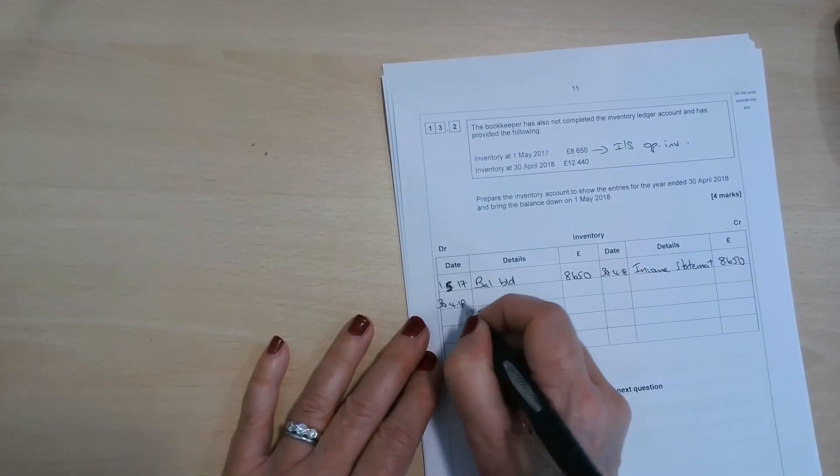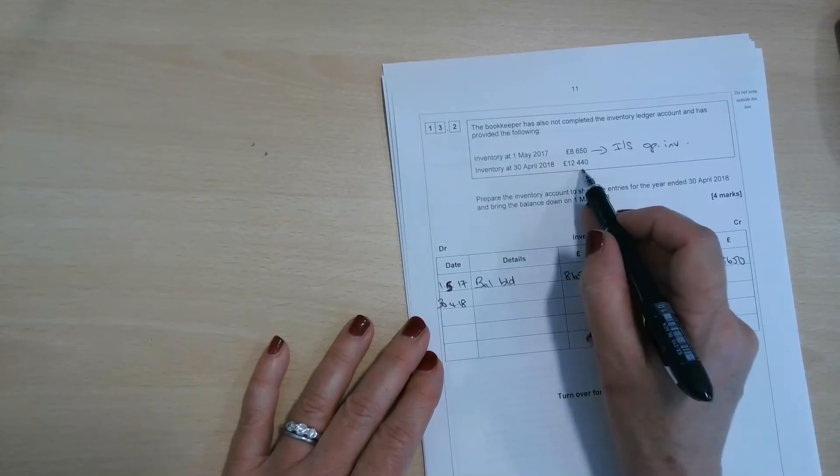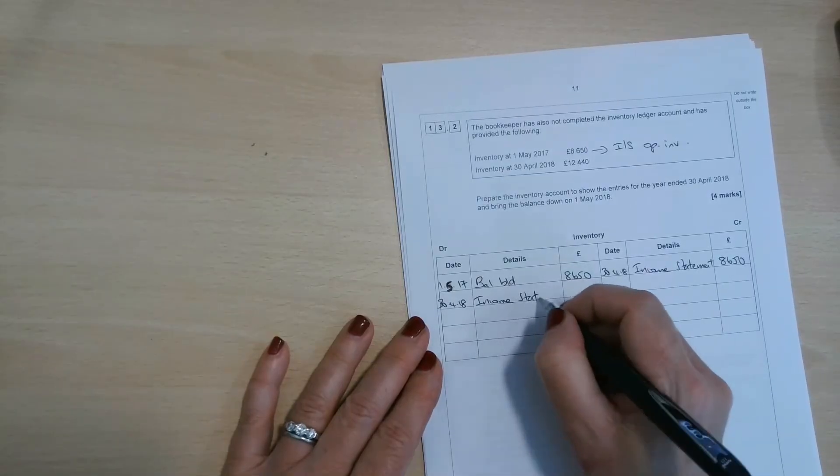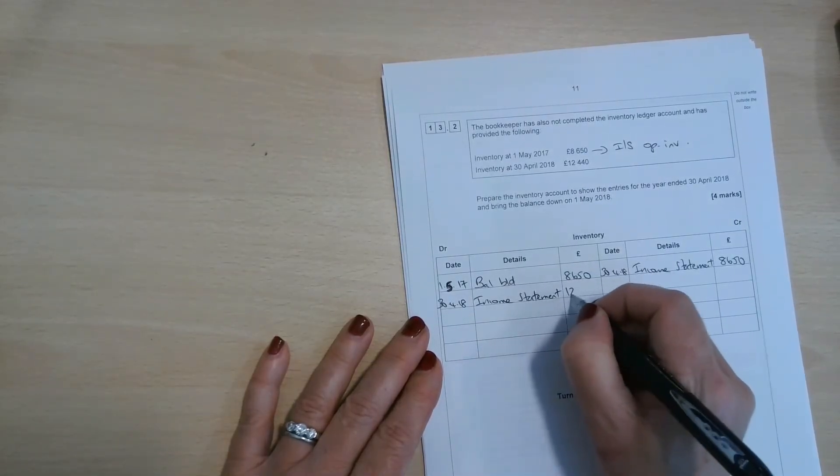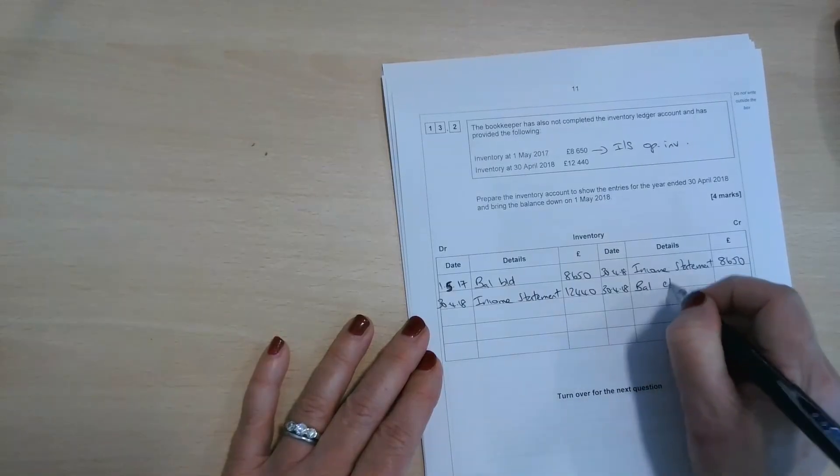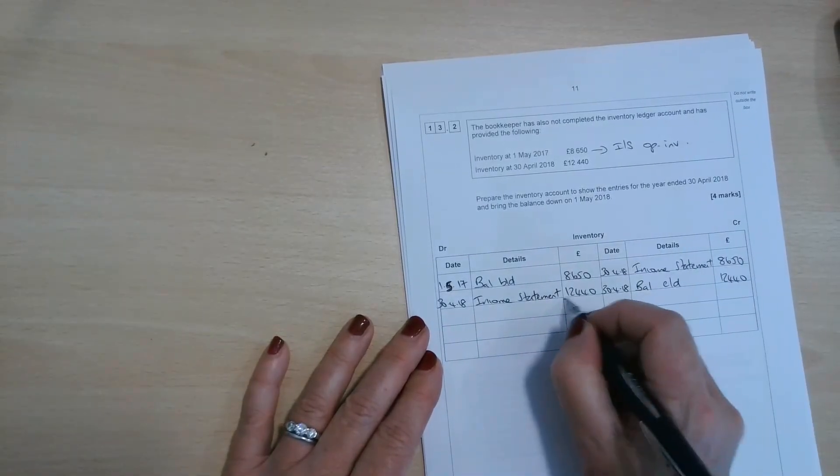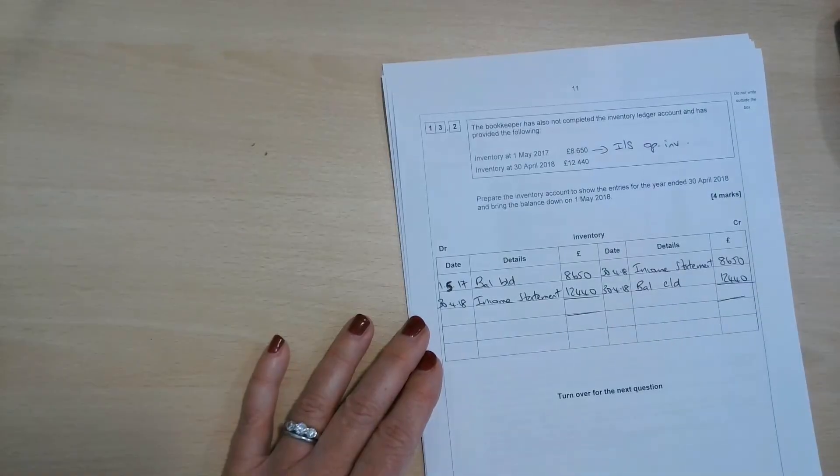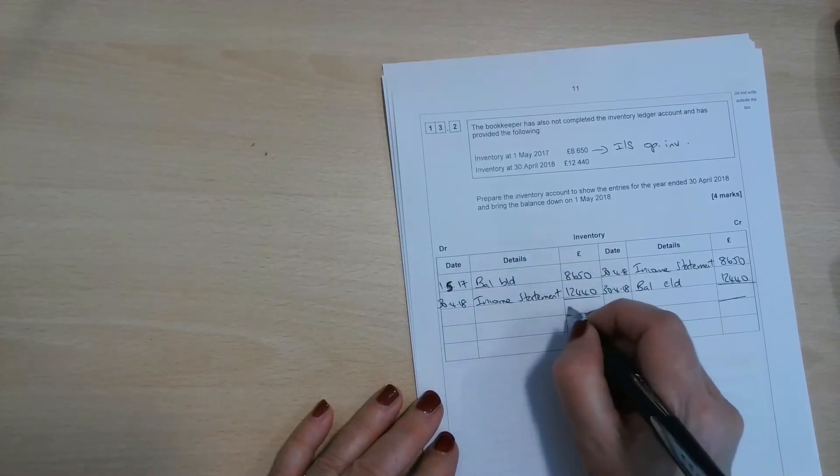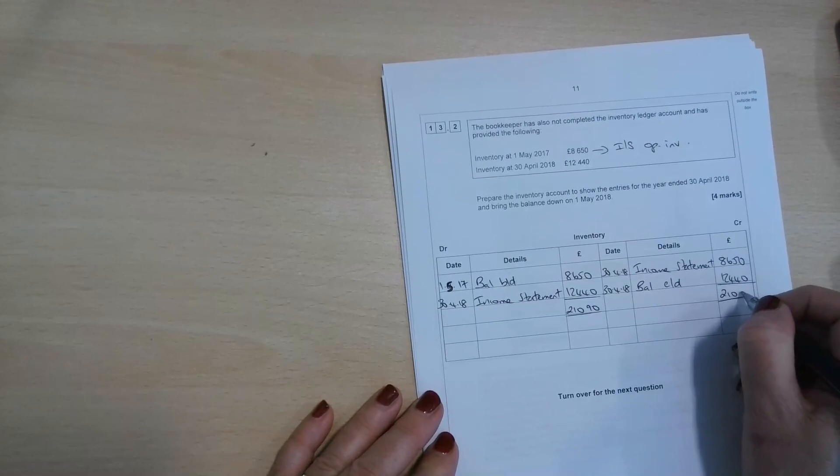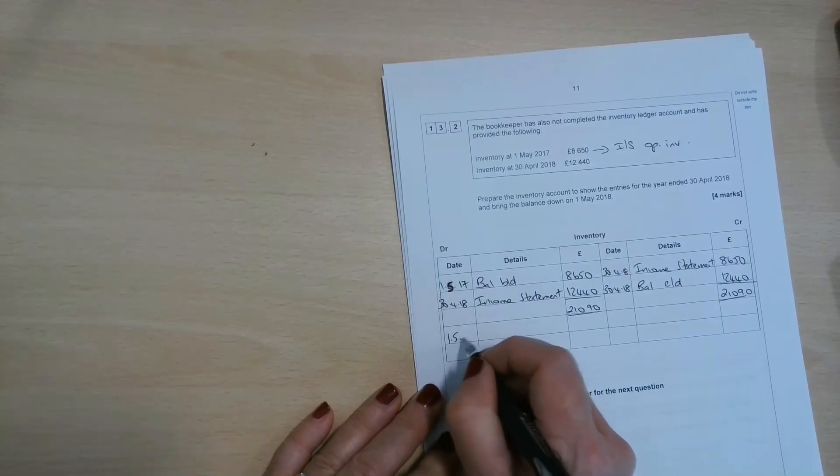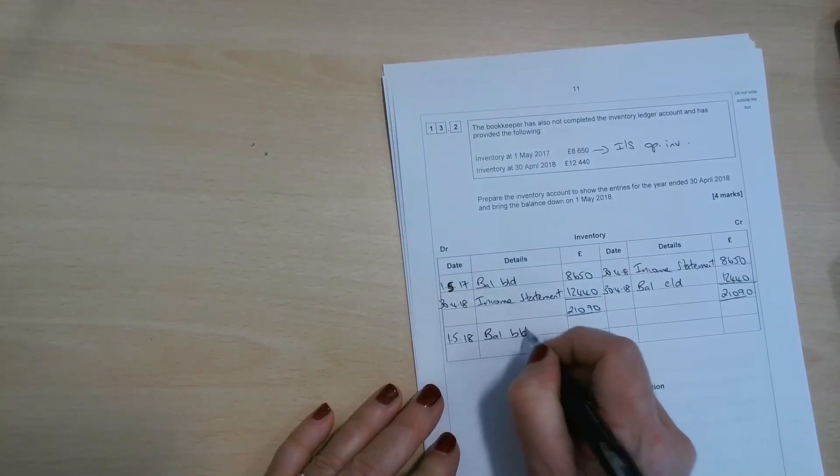And then what we need to do is make a second transfer to the income statement for closing inventory. So closing inventory is going to be credited to cost of sales. It's going to be debited here. So opening, sorry, opening income statement, £12,440, which gives us a balance carried down of £12,440. We can add those two up together. I'm going to use my calculator for this one. £8,650, £12,440, £21,090 in there. And then we must remember to bring the balance down at the start of the next year. So 1st of May 2018, BALBD. And we start the whole process again.